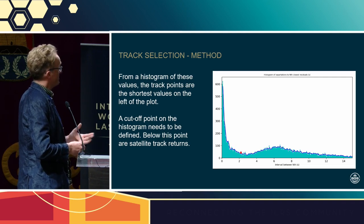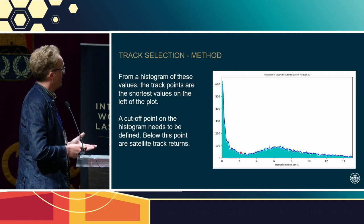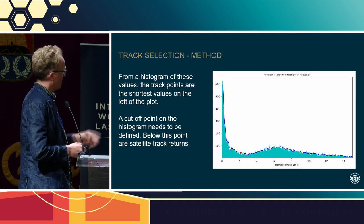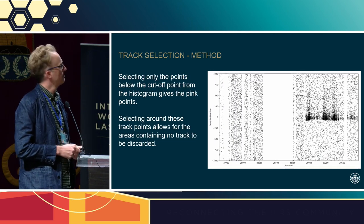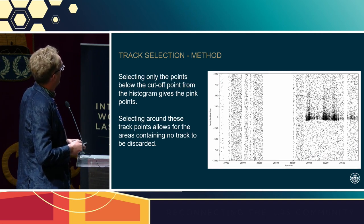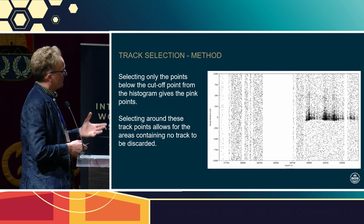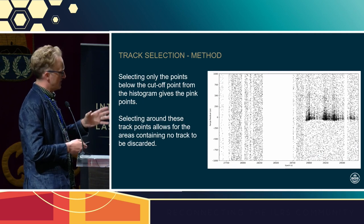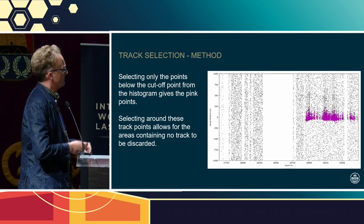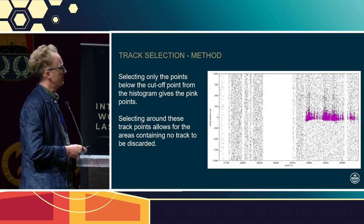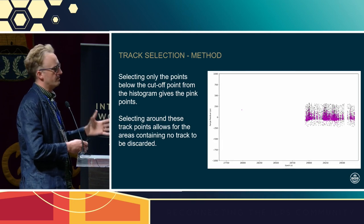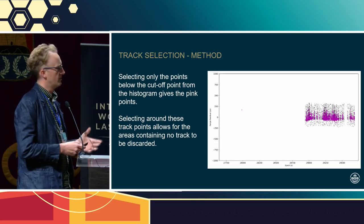We need to decide a cutoff point on this histogram. Anything below that cutoff point is what could be a satellite return. Taking only the points below the cutoff gives us the pink points, and we've been able to correctly identify the track. We can then select around those points and move on to the next stage of the reduction.